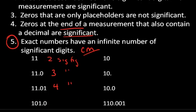This number here, 101.0. Again, we have a zero trailing a decimal place. So this zero must be telling me something about the accuracy of the measurement. So this also has four sig figs.